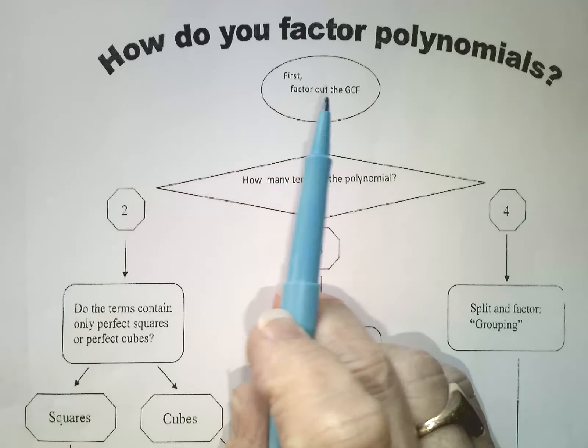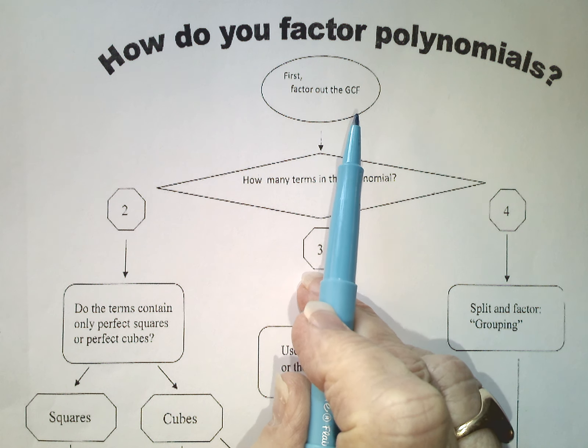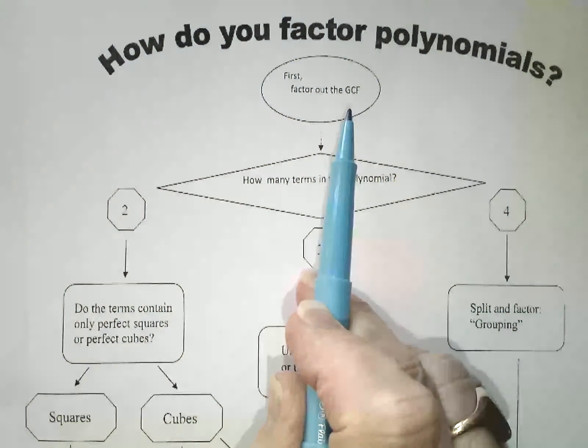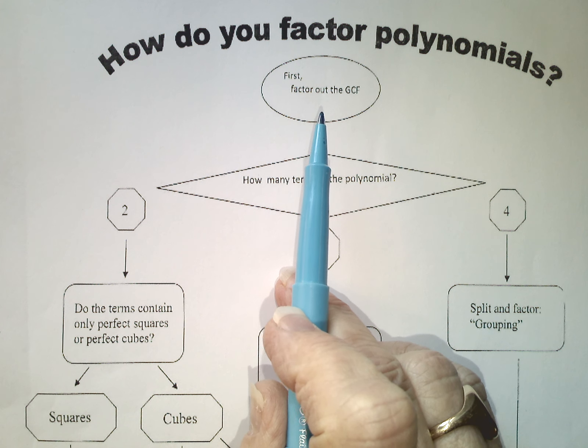The very first thing we look for, can we factor out a common factor? If there is a GCF, we yank it out. That simplifies the rest of the terms.